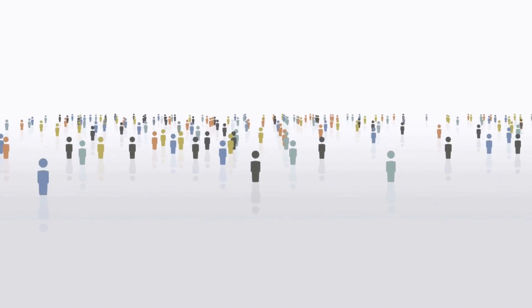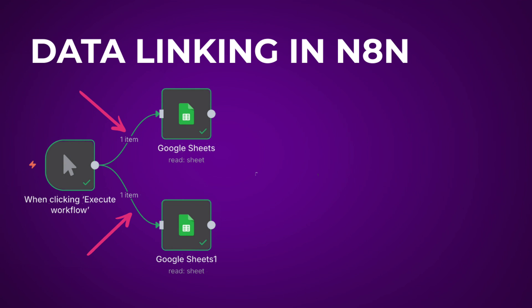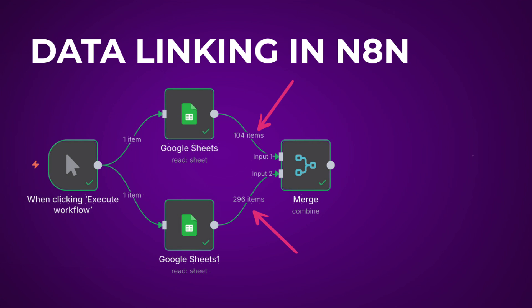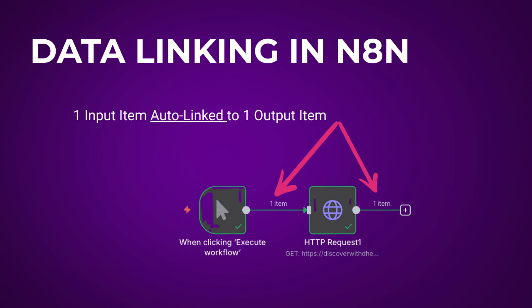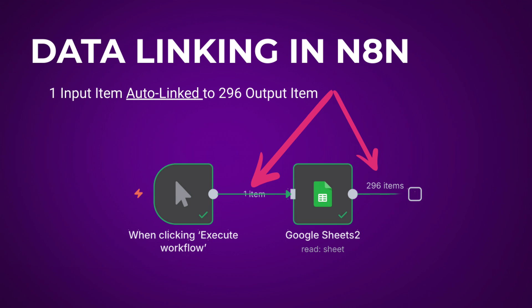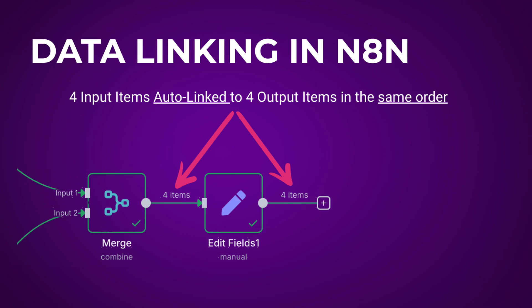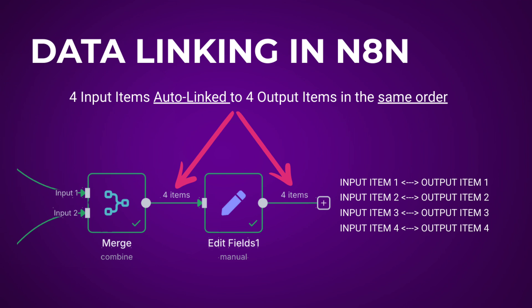So what exactly is data item linking? An item is a single piece of data in N8n. Nodes receive one or more items, operate on them, and then output new items. Each item links back to the previous items. In most cases N8n offers automatic item linking. For example, if you have a single input and a single output, both will always be linked to each other. If you have a single input and multiple outputs, all the outputs will get linked to that single input.